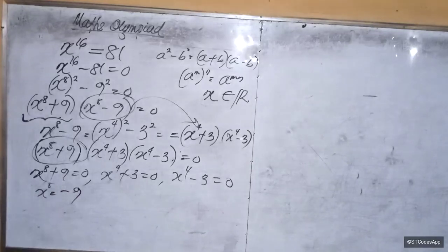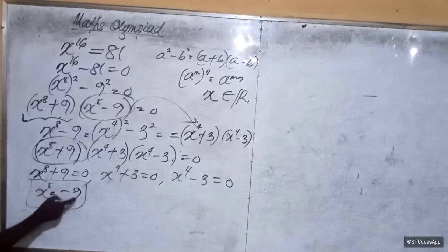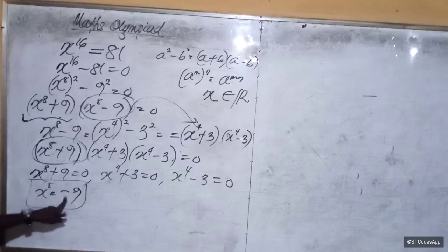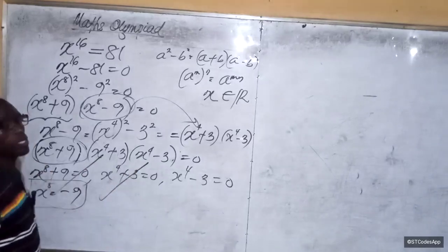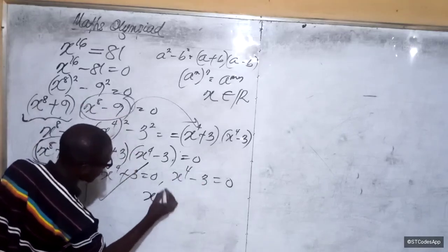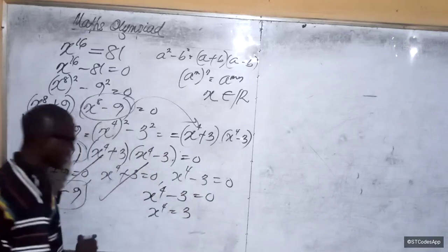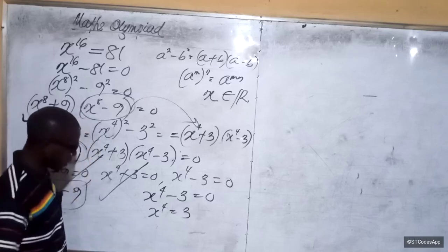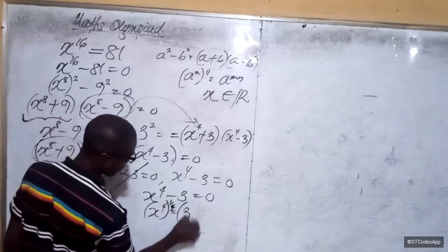Seeing this, this will not give us a real number. This will give us a complex number because it has an even number root. Same goes for this. So this will not give us real number answers. This is the number that can give us real number answers. So we go for that, saying that x to the power 4 minus 3 is equal to zero, and we have x to the power 4 is equal to 3.